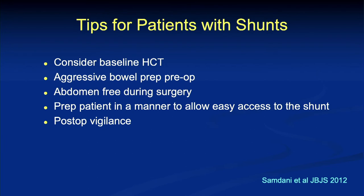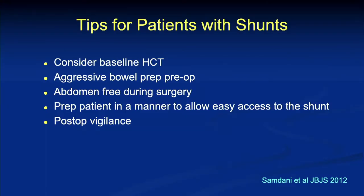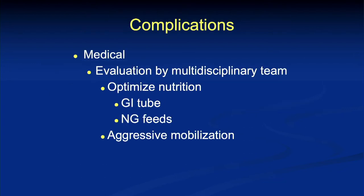Tips for patients with shunts: consider a baseline head CT, do an aggressive bowel prep pre-op — important on multiple fronts including infection. Try to get the abdomen as free as you can. Know where that shunt is. Even as ortho surgeons, it is not hard to use a butterfly in an emergent situation — if we can do a tracheostomy or put in a chest tube, putting a little butterfly in a shunt is not that complicated. And have really strong post-op vigilance, because you give them narcotics, long surgery, they're neuromuscular — and you could find out they've herniated because their shunt failed.